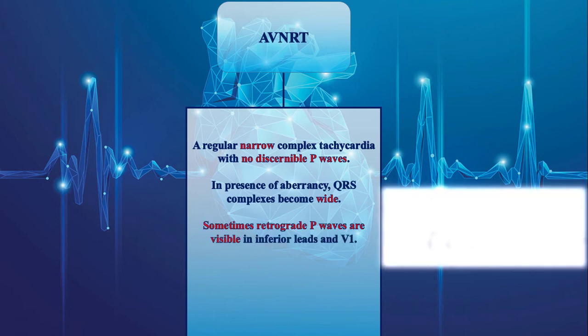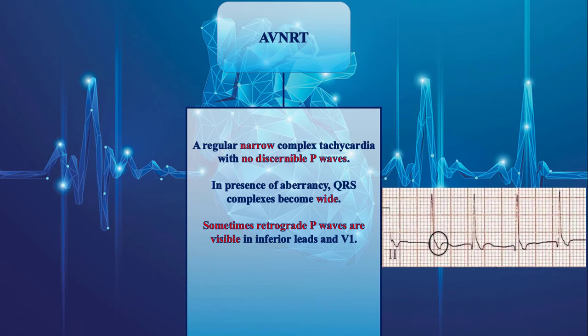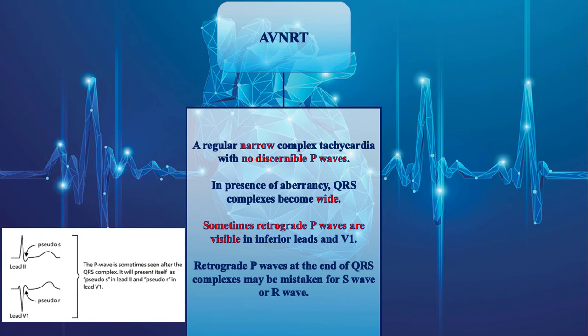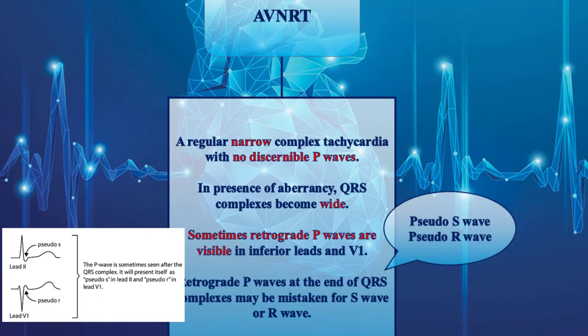Second, although the P-waves are usually not visible, sometimes retrograde P-waves are visible in inferior leads and V1. Remember that in AVNRT and AVRT, the atria are activated retrogradely from below upward. Therefore, in AVNRT, retrograde P-waves superimpose on QRS complexes or may be recorded immediately after the QRS complexes, deforming the ST segment and T-wave. The retrograde P-waves occurring at the end of QRS complexes may be mistaken for an S-wave in inferior leads or an R-wave in lead V1 — that's why they are called pseudo-S-wave and pseudo-R-wave, respectively.